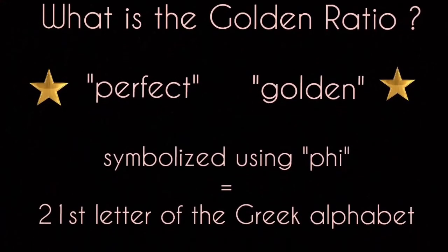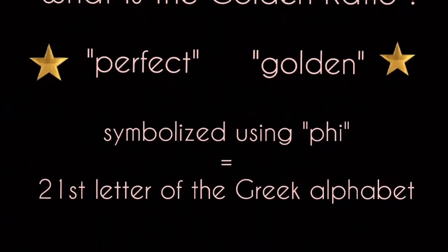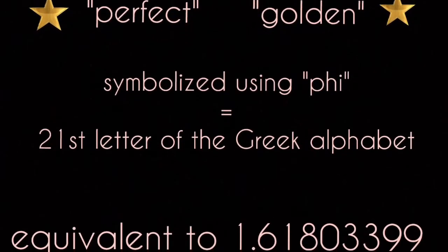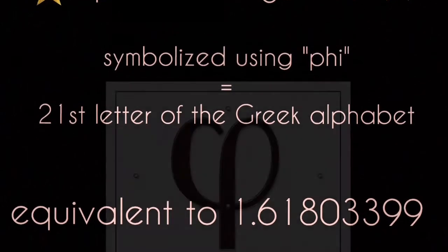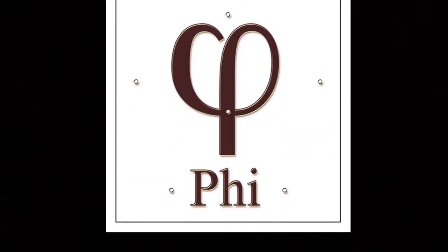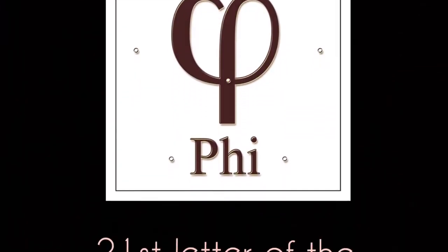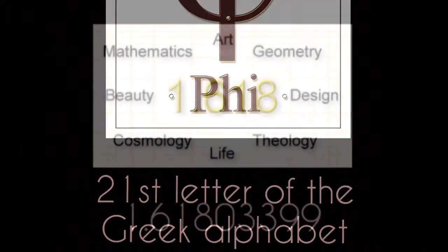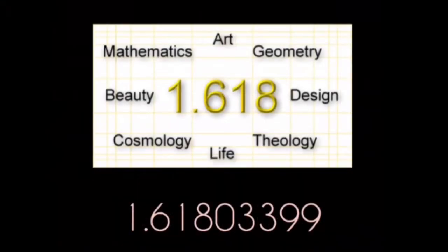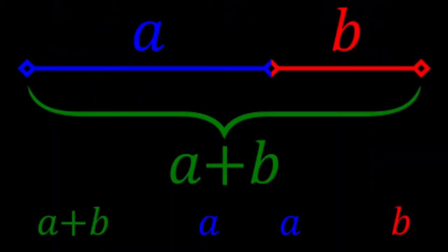What is the Golden Ratio? The Golden Ratio is referred to as the perfect or the golden number, and it is symbolized using Phi, which is the 21st letter in the Greek alphabet. In numbers, the Golden Ratio is equivalent to 1.61803399 and the numbers go on. The Golden Ratio is formed by dividing a line into two parts.